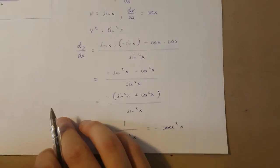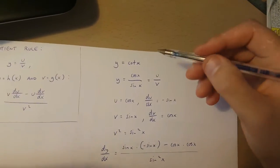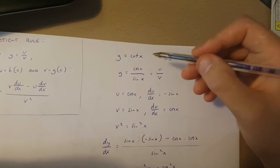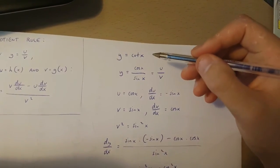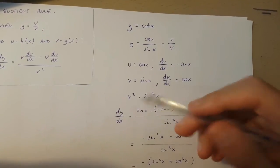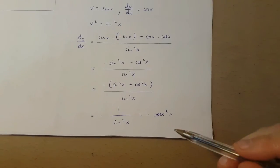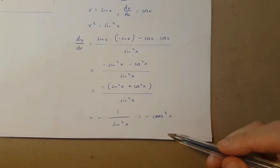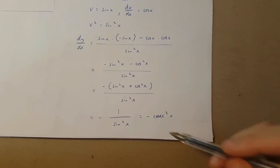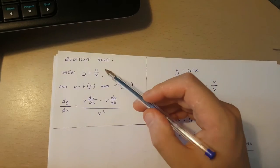So we know that when y is equal to cot x, dy over dx is equal to minus cos x squared, thanks to the quotient rule.